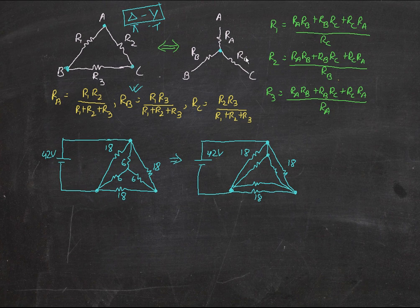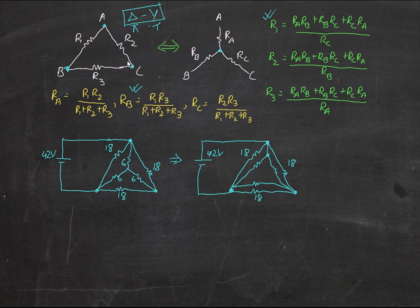If you want to convert the other way — from Y to Delta — you use the formula shown in green. For finding R1, you take the sum of all products of pairs: Ra·Rb + Ra·Rc + Rb·Rc, divided by the opposite resistor. For R1, the opposite point on the triangle is C, so you divide by Rc. For R2 you divide by Rb, and for R3 you divide by Ra.